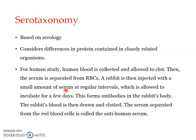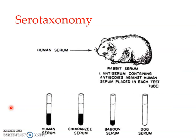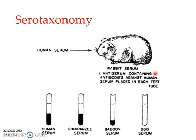Similar studies can be conducted with different groups of organisms to compare the antibodies produced. Here we see the experiment: human serum was extracted and introduced into the rabbit's body. Since it is an antigen, antibodies are produced inside the rabbit against the human serum. The rabbit serum will then contain antibodies against the human serum, known as anti-human serum. This anti-human serum is then mixed with serum from four different sources: human, chimpanzee, baboon, and dog.